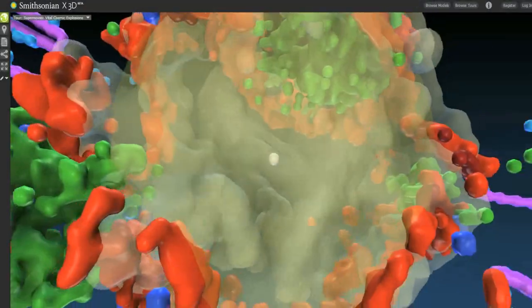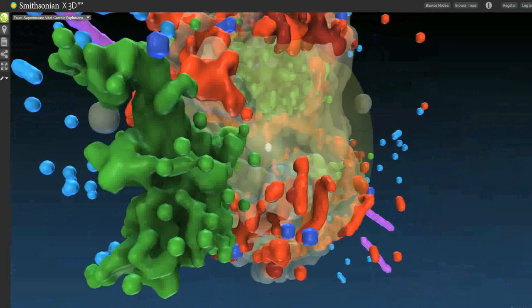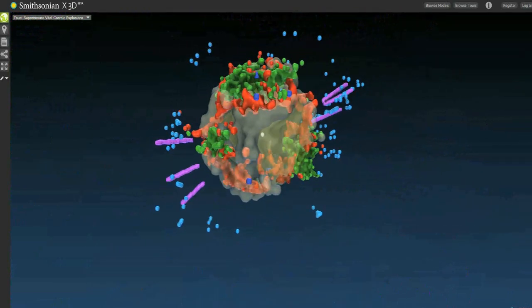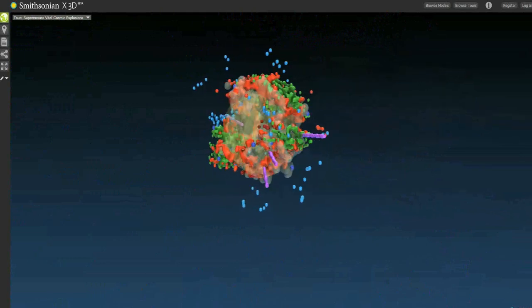This new Smithsonian viewer will allow scientists, and the public, to tour the 3D model of Cass-A in exciting new ways, by being able to fly around the remnant themselves.